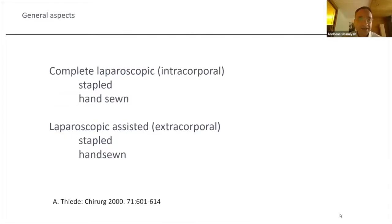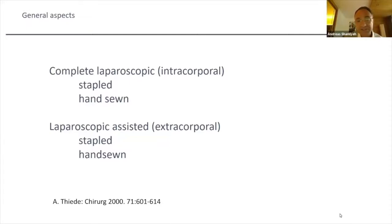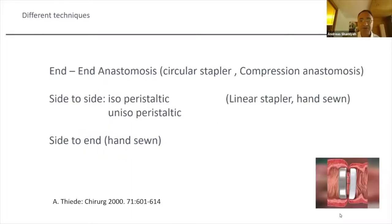We have different anastomosis options. We have the option of a complete laparoscopic intracorporeal anastomosis — stapled or hand-sewn — or a laparoscopic-assisted extracorporeal anastomosis through the extraction site near the umbilical area — also stapled or hand-sewn. There are different configurations: end-to-end, side-to-side which can be isoperistaltic or anti-isoperistaltic, and side-to-end or end-to-side anastomosis. The intracorporeal stapled is the most popular laparoscopic option now.